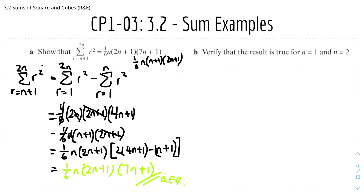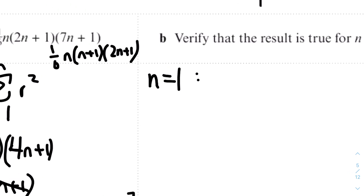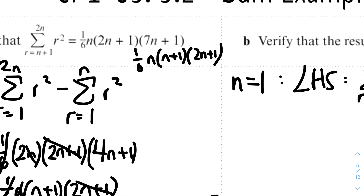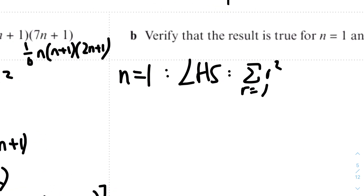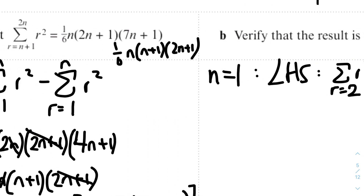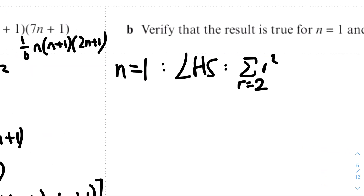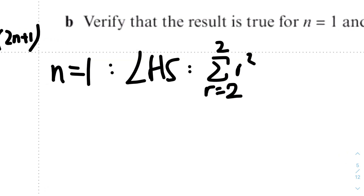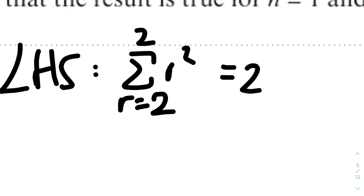Part b: verify the result is true for n equals 1 and n equals 2. When n equals 1, the left-hand side is the sum of r squared from r equals 2 to 2 — since the bottom limit is n+1 = 2 and the top is 2n = 2. So it's just 2 squared, which equals 4.